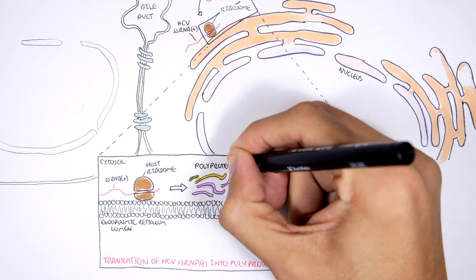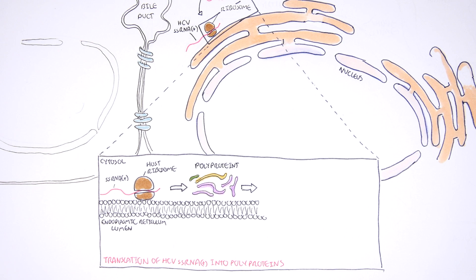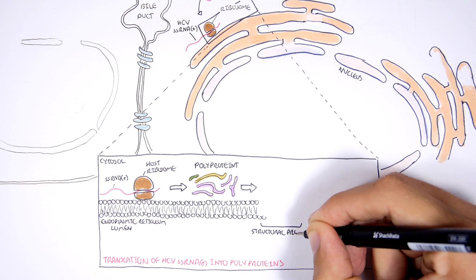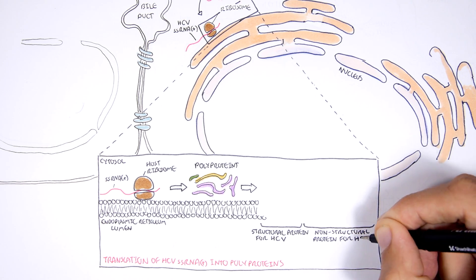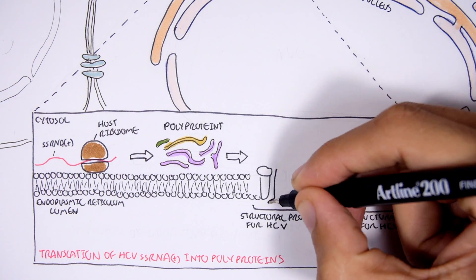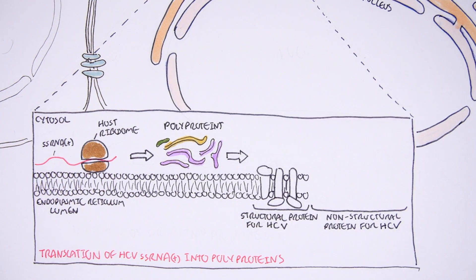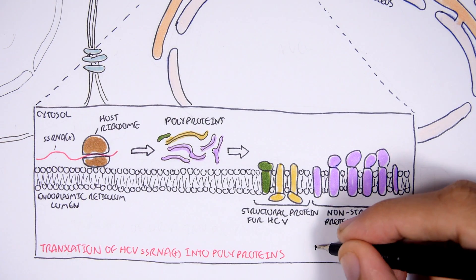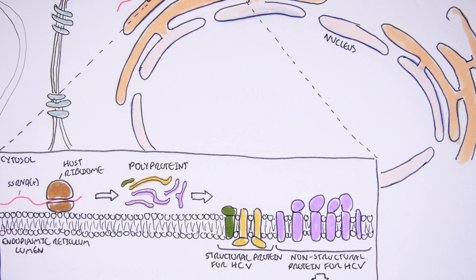These proteins will fold and arrange themselves to form many things for the hepatitis C virus, and can be divided into two main categories: structural proteins and non-structural proteins. Structural proteins are used to form the structure of the hepatitis C virus, such as the capsid or the surface proteins. The non-structural proteins, however, will form the replication complex.